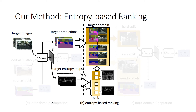The second step is the entropy-based ranking system. Given an unlabeled target image, the prediction map and entropy map are generated by the trained inter-domain generator. To separate the target domain into an easy and hard split, we take advantage of the entropy map and propose a ranking system for all target images. We introduce the hyperparameter lambda as a ratio for the target domain separation.